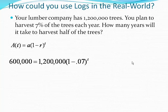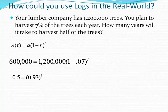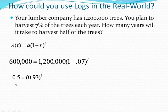So now, when we're solving these, we have to get the exponential part, the part on the right, all by itself. So we have to get rid of that 1.2 million. We do that by dividing. 600,000 divided by 1.2 million is 0.5, and 0.5 is what? A half. So that's why it just becomes a half.